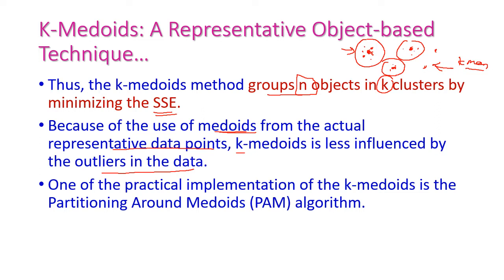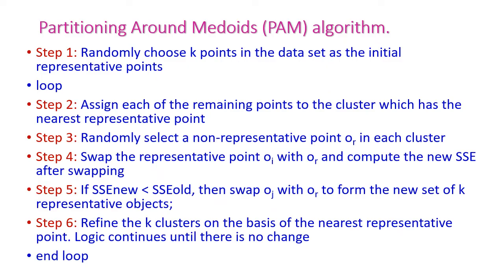One of the most popular and practical implementations of k-medoids is the Partitioning Around Medoids algorithm, that is the PAM algorithm. Let us now look at the PAM algorithm, which has six steps. Step one: randomly choose k points in the dataset as initial representative points. For example, if we have four clusters, we randomly select four data points as representative points.